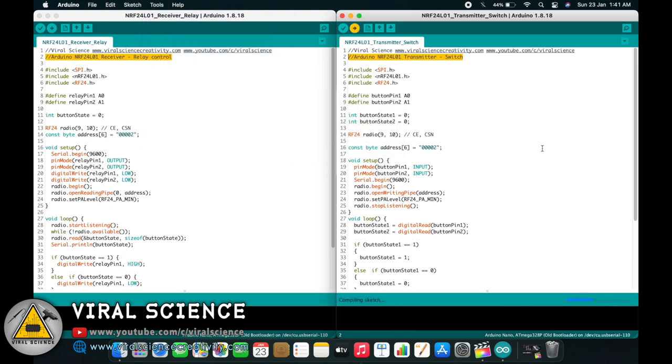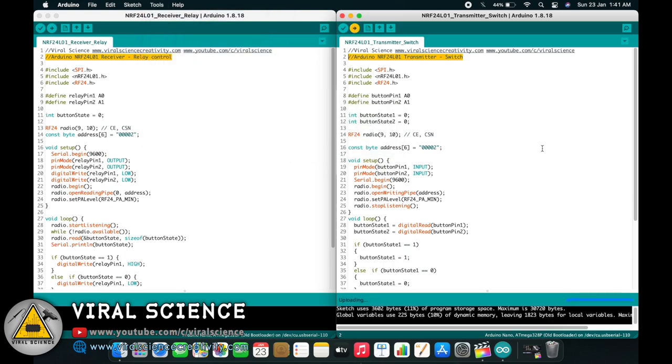First, I'm uploading the code to the transmitter Arduino board. After uploading the code, remove the transmitter Arduino board and connect the receiver Arduino board to upload the second code.